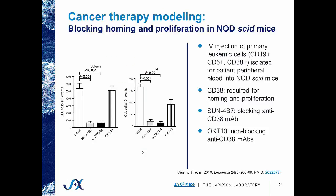For these experiments, investigators injected intravenously primary leukemic cells that are CD19 and CD38 positive, isolated directly from patient peripheral blood. CD38 is required for the homing and proliferation of this particular leukemia. Investigators took their therapeutic antibody SUN-4B7, which blocks CD38, and their negative control OKT10, a non-blocking anti-CD38 monoclonal antibody, and measured homing and proliferation both in the spleen and the bone marrow. In both organs, the blocking CD38 antibody was able to inhibit proliferation and homing.